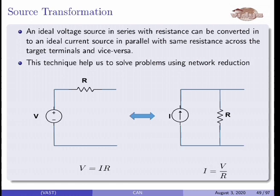Suppose there is a voltage source having value 10 volts connected in series with a 5 ohm resistance. We can convert that two-terminal network into another two-terminal network having a parallel current source and resistance. The value of the current source will be equal to the voltage source divided by resistance, V by R. In this case, 10 by 5 gives 2 amperes, and the parallel resistance value is the same as that of the series resistance. Similarly, a current source of 2 amperes in parallel with 5 ohms can be converted into a voltage source of 2 × 5 = 10 volts in series with 5 ohms.